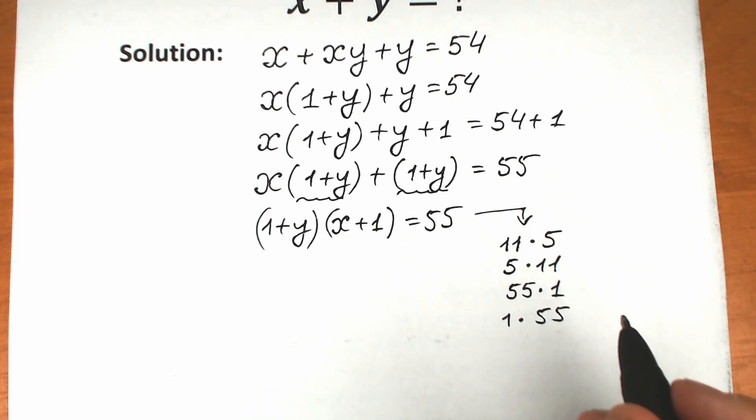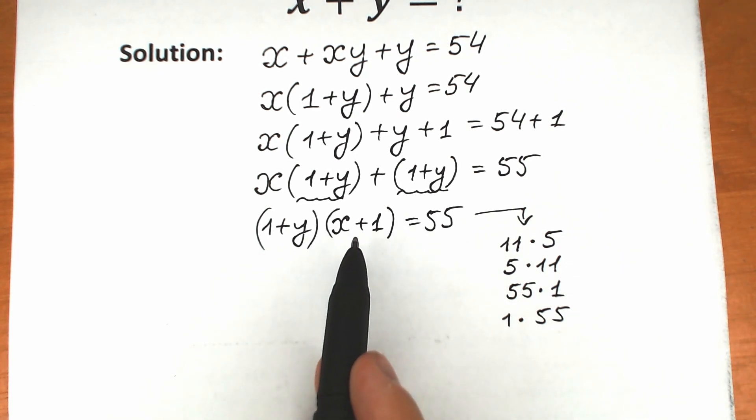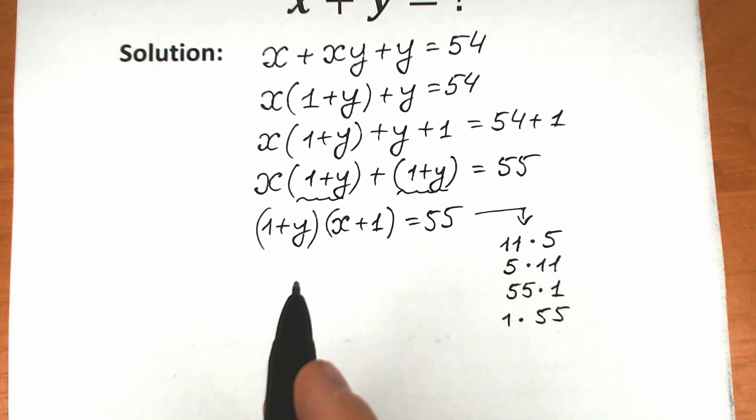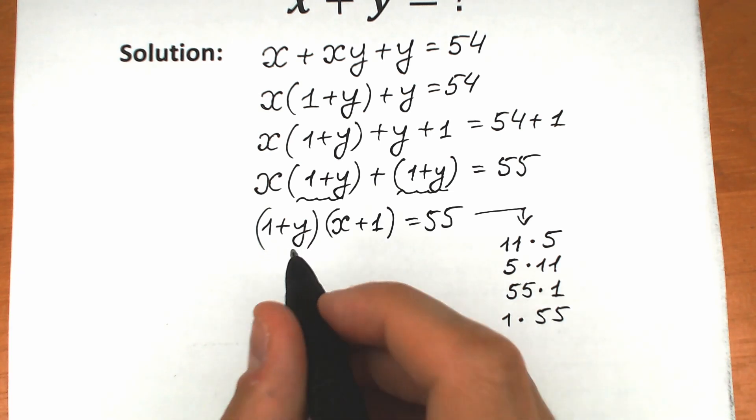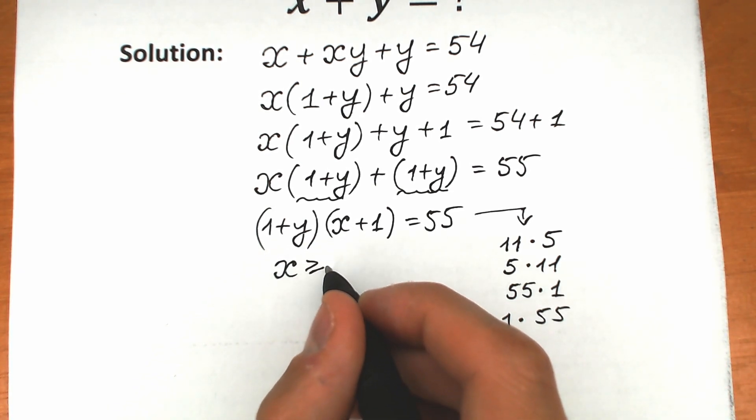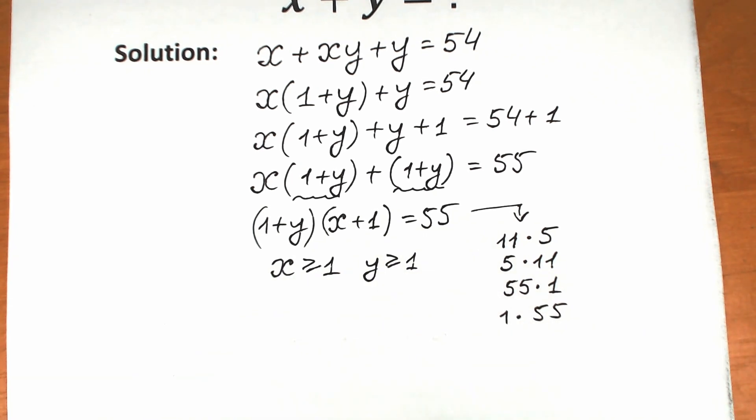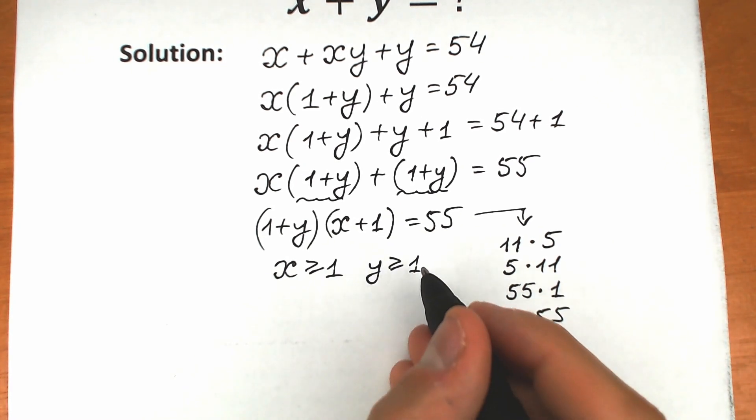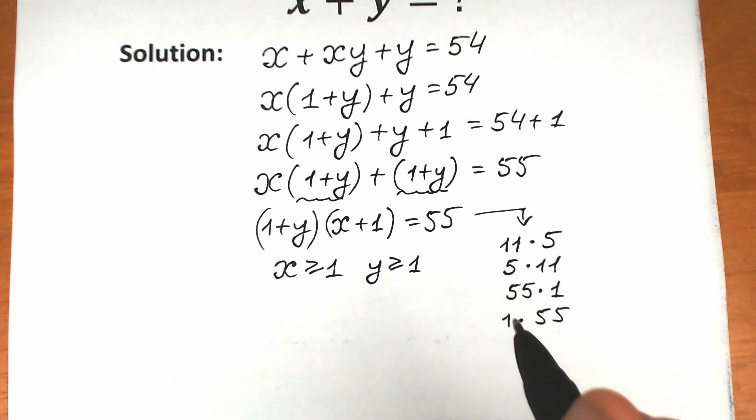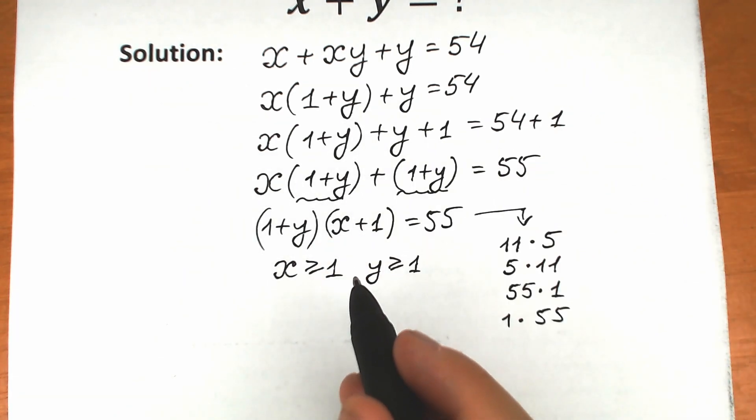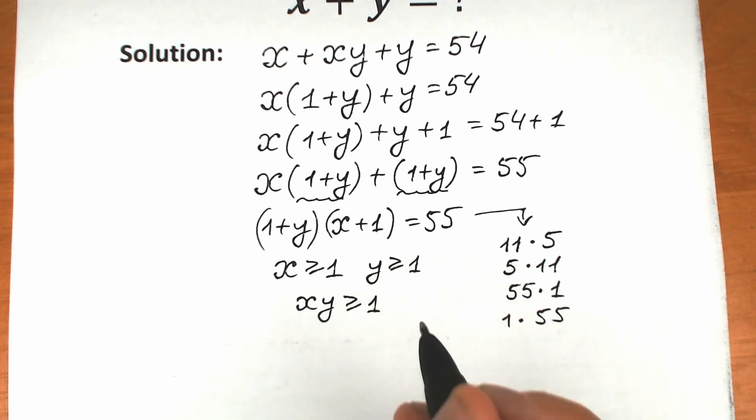But let's look closely at this expression. Obviously, x is greater than or equal to 1, and y is greater than or equal to 1, because they are natural numbers. As I told before, x and y are natural numbers. Then the product x times y is also greater than or equal to 1.